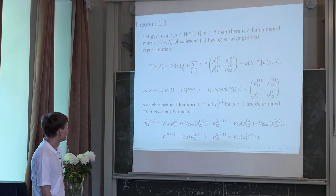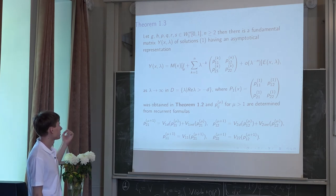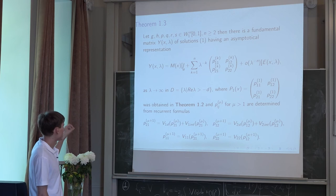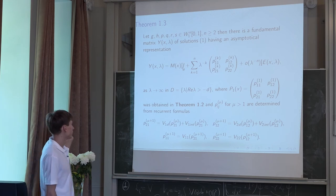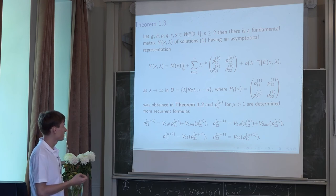And in the general case, we have the next form, next asymptotical representation in the half plane. And here we have p_1 matrix as on the following slide.